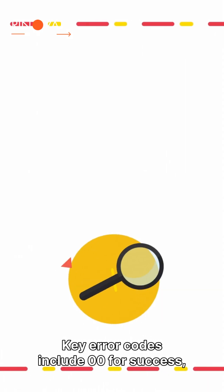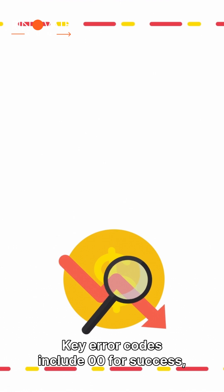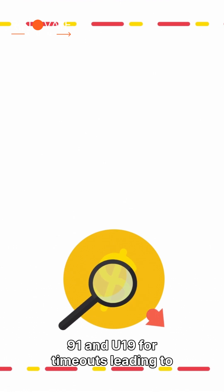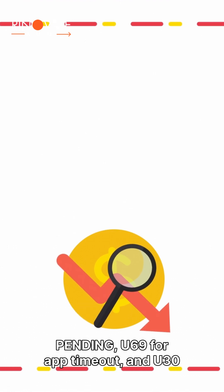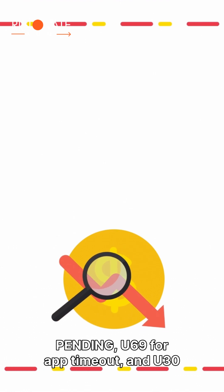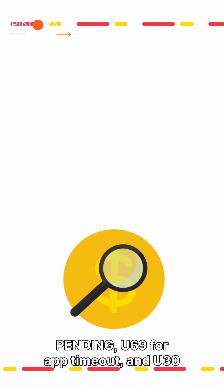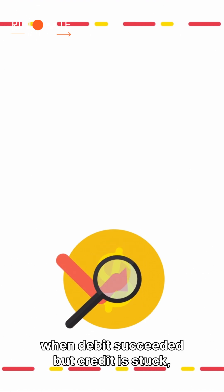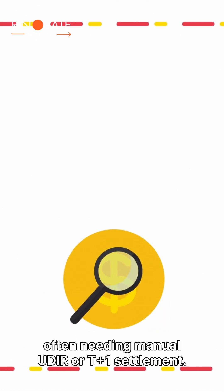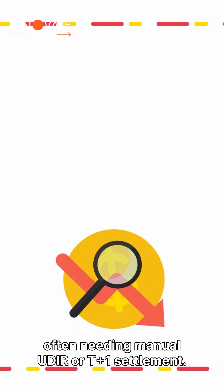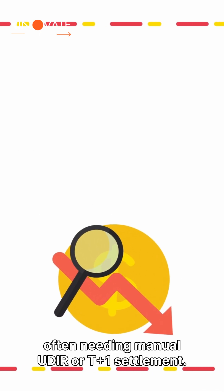Key error codes include 00 for success, 91 and U19 for timeouts leading to pending, U69 for app timeout, and U30 when debit succeeded but credit is stuck — often needing manual UDR or T+1 settlement.